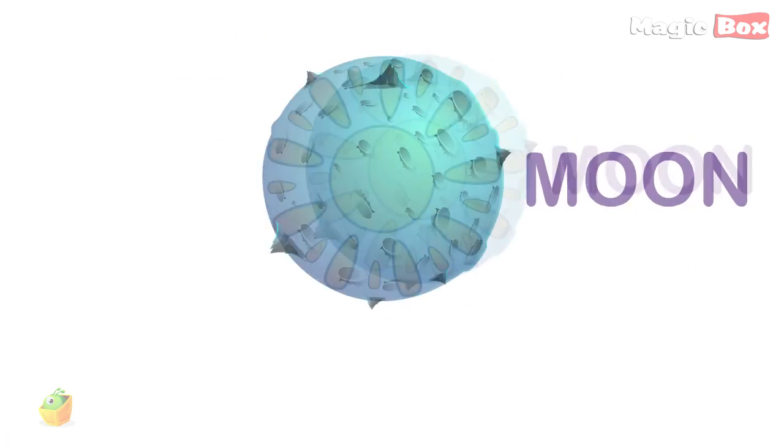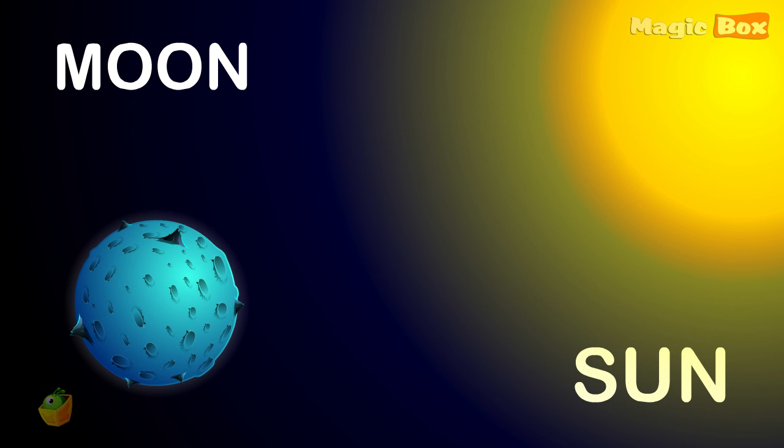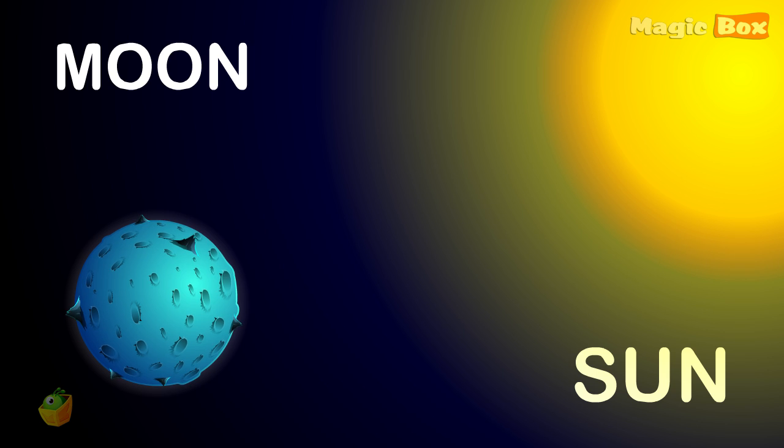The moon gives off no light of its own, but reflects sunlight from its rocky surface. What we call moonshine is actually sunshine reflected by the moon.